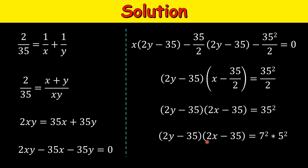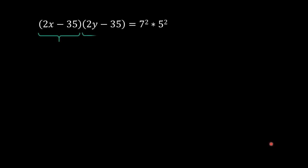Using the fact that x and y are positive integers, we enumerate all possible factor pairs on the right-hand side. Since x and y are positive integers, (2 times a positive integer minus 35) gives us some integer. The first possible value for the first factor is 1, making the second factor equal to 35 squared. It cannot be 2 because if the factor is even, everything would be even. Similarly, 3 is not a factor of 35, so 3, 4, etc. don't appear — but 5 will.